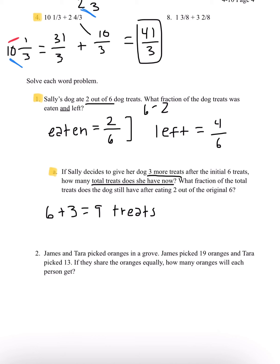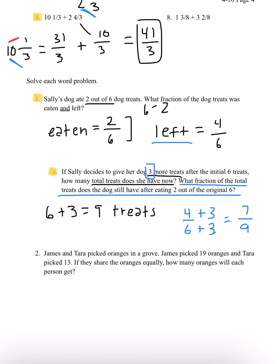And it says, what fraction of the total treats does the dog still have after eating 2 out of the original 6? Her dog ate 2 out of 6, so we have 4 out of 6 left right now. But Sally gave her dog 3 more treats, so we add 3 to both top and bottom: 4 plus 3 is 7, and 6 plus 3 is 9. So the dog will still have 7 over 9 treats. And that's our answer.